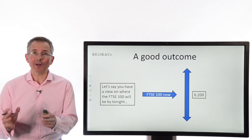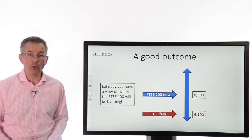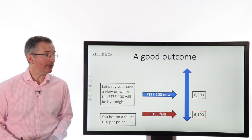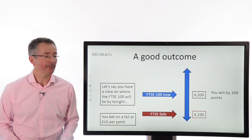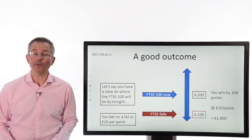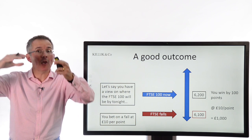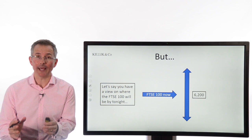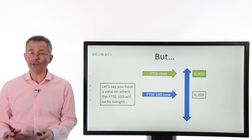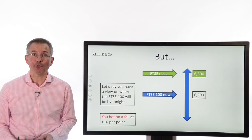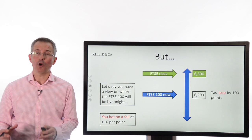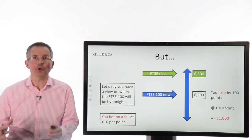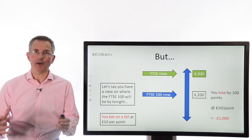What will be a good outcome? Well, if the FTSE is at 6,200 when you lay that bet, and it duly falls to 6,100 points, you've won. You bet on a fall at £10 per point, so you win 100 points — at £10 per point, that's £1,000. Bear in mind, this is money you've made from betting on something going down rather than up. But it can go wrong. If the FTSE rises to 6,300 points and you've put a down bet on at £10 per point, you've lost 100 points, which is £1,000. This is a way you can win or lose a directional bet on something like an index.